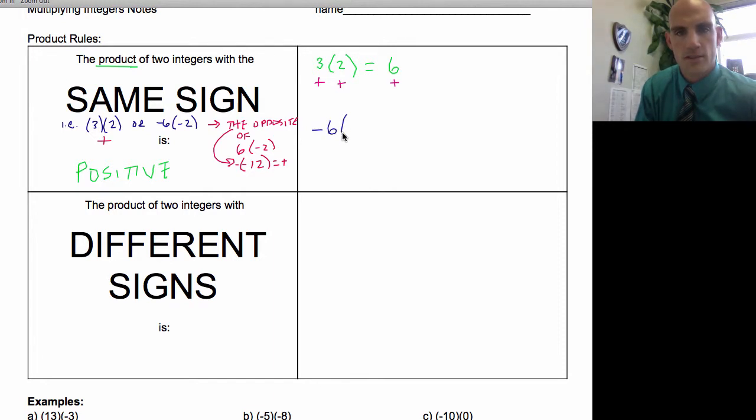Negative six times negative two equals 12. So negative, negative, positive. Same, same. So those there are the same. Product of same signs, positive.